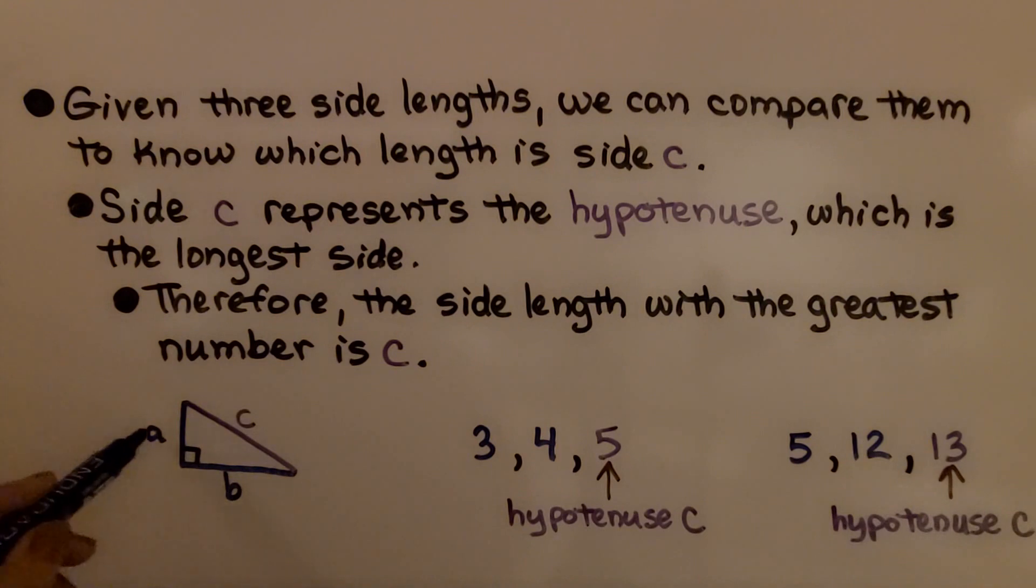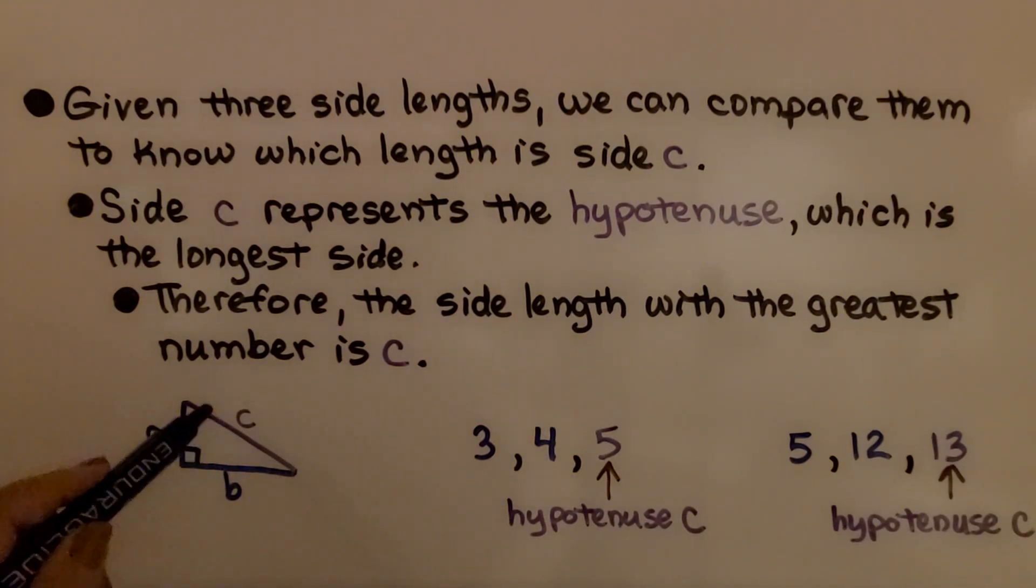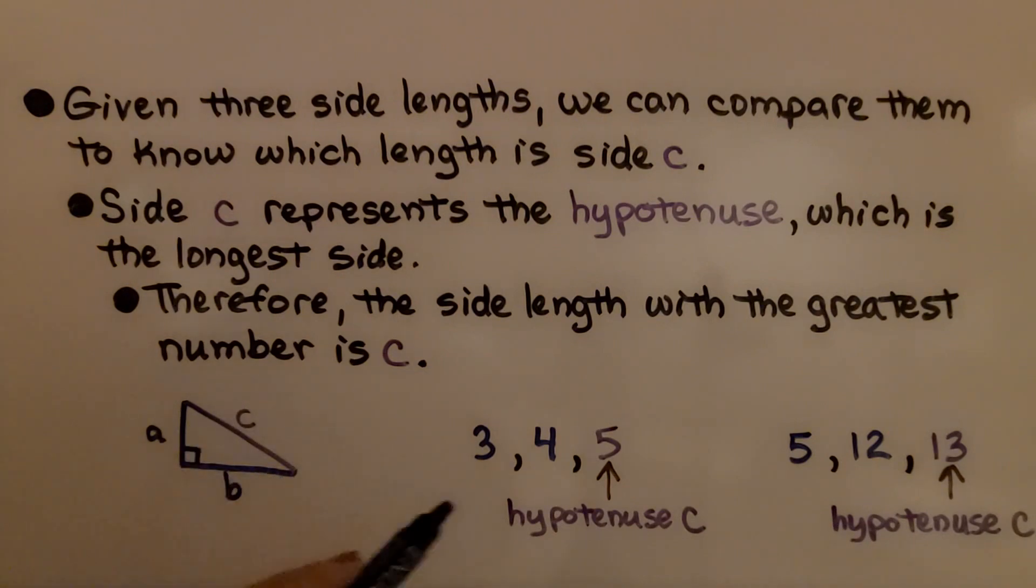We can assign a and b to either leg, so these don't matter. But it's very important to know which one is c because that's what it's going to be set equal to.